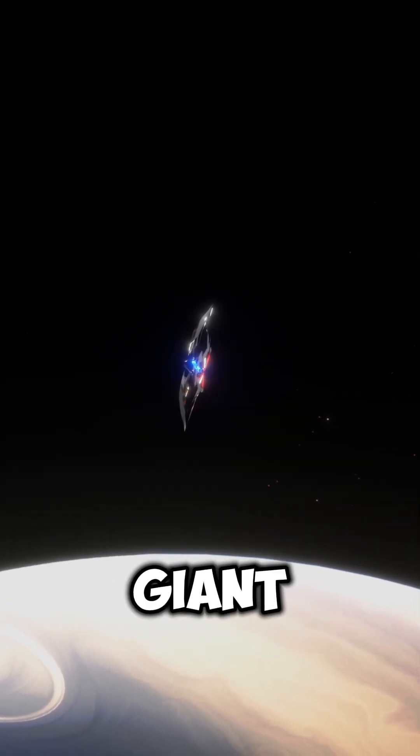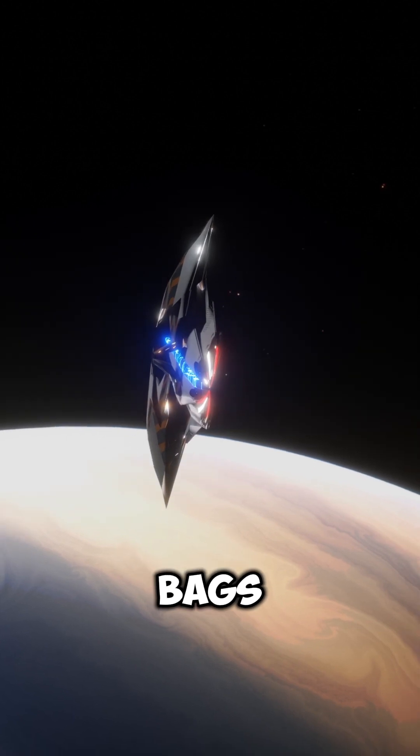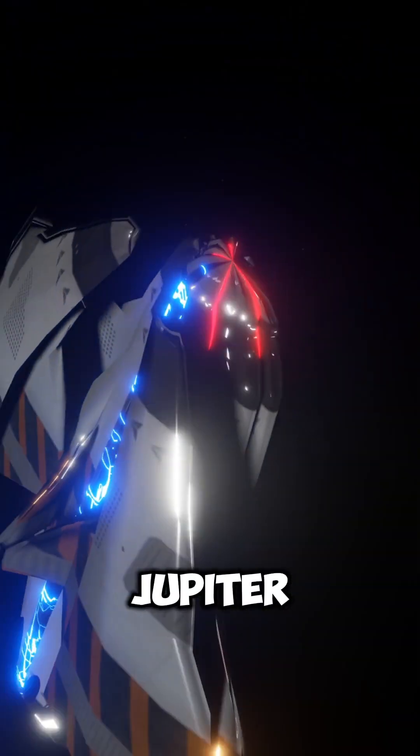When the sun becomes a red giant, we might have to pack our bags and move to the moons of Jupiter or Saturn. They could turn into ocean worlds.